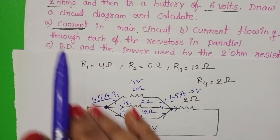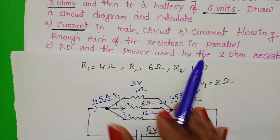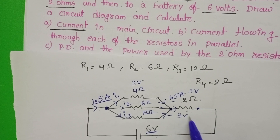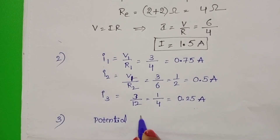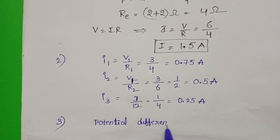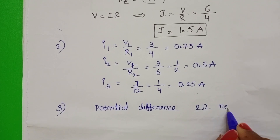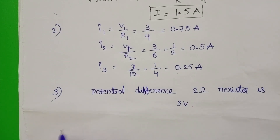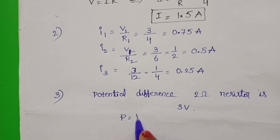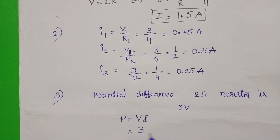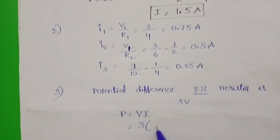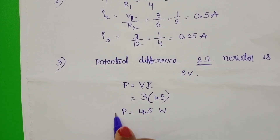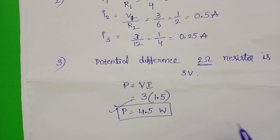Last question: potential difference and power used by the 2 ohm resistor. The potential difference across the 2 ohm resistor is 3 volt. Power equals V times I, where V is 3 volt and the total current through the 2 ohm resistor is 1.5 amperes. Therefore, power equals 4.5 watts. The answer for the third question is 4.5 watts.